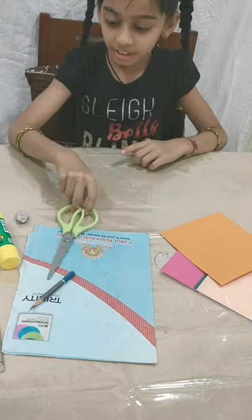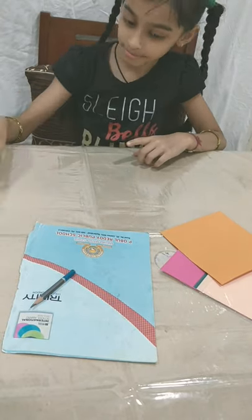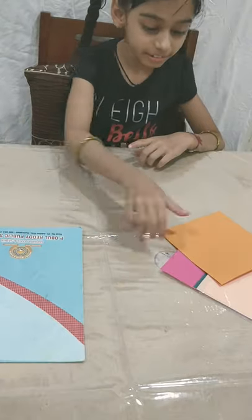For making tangram pieces, I need one scissor, three sticks, scale, eraser, pencil, waste cardboard and origami paper.